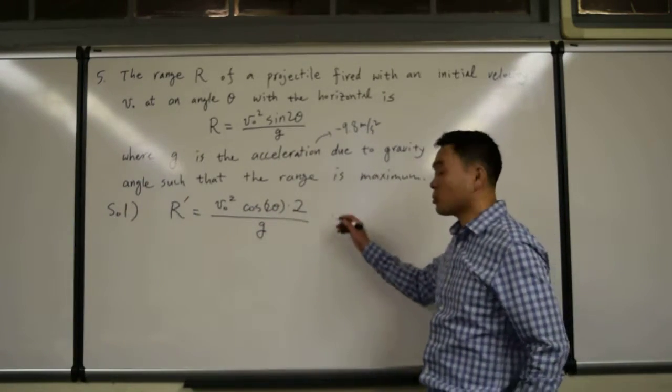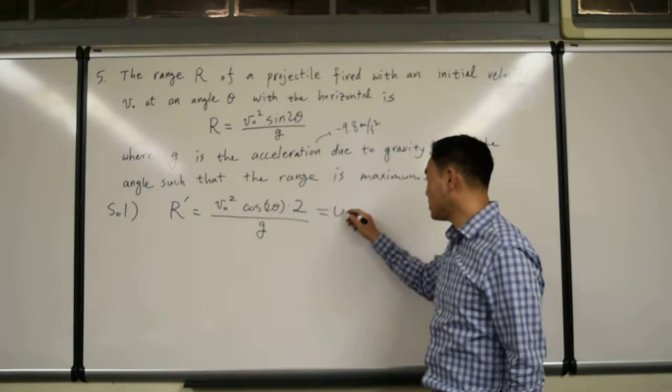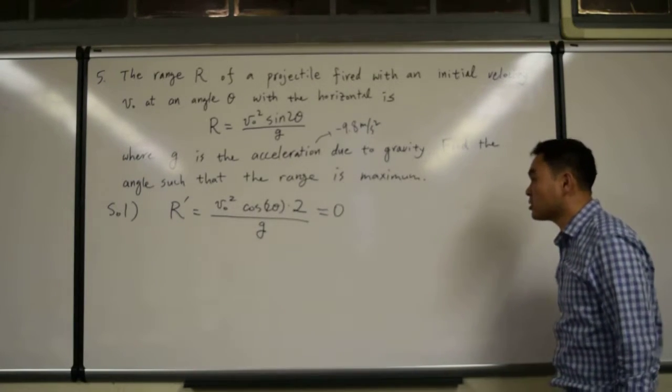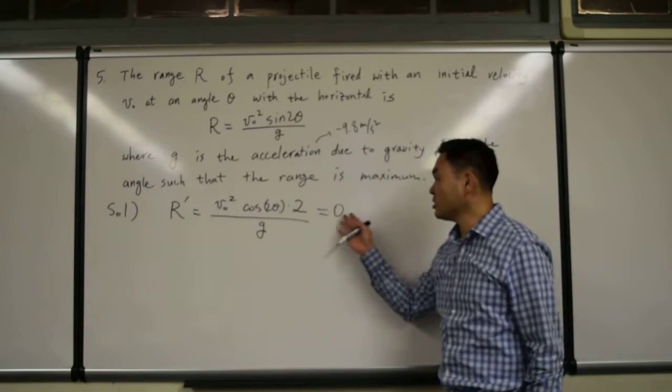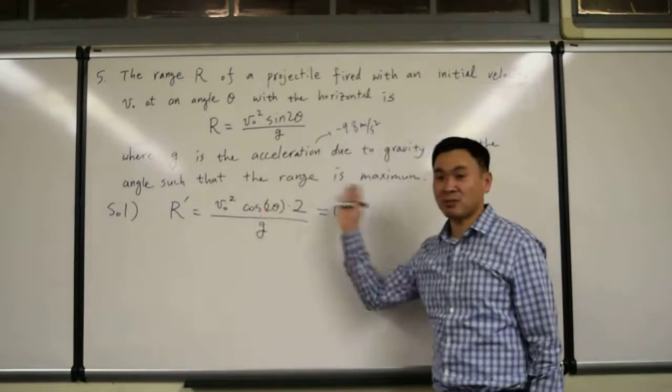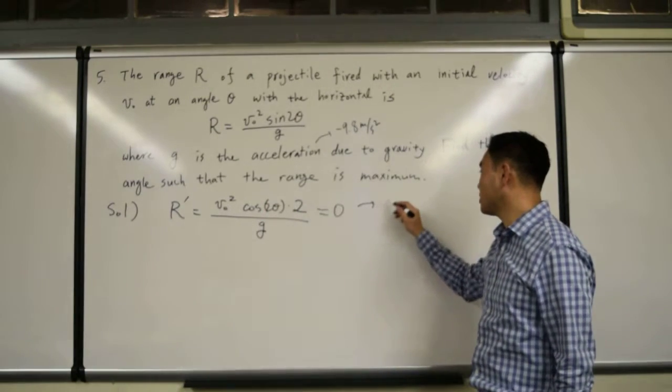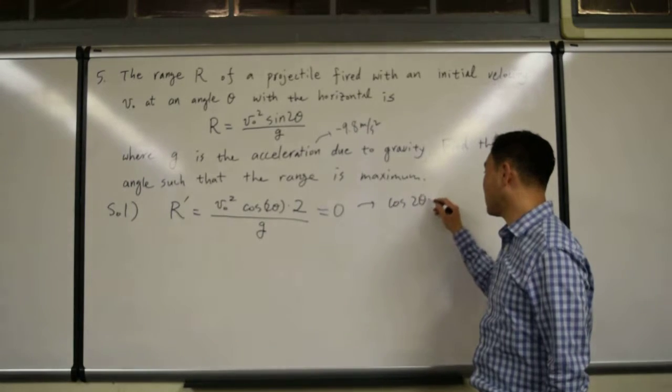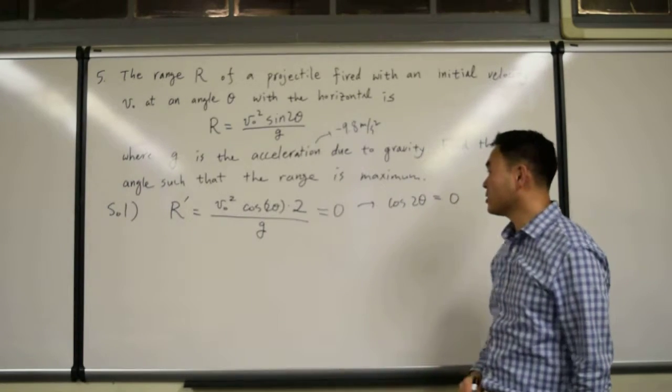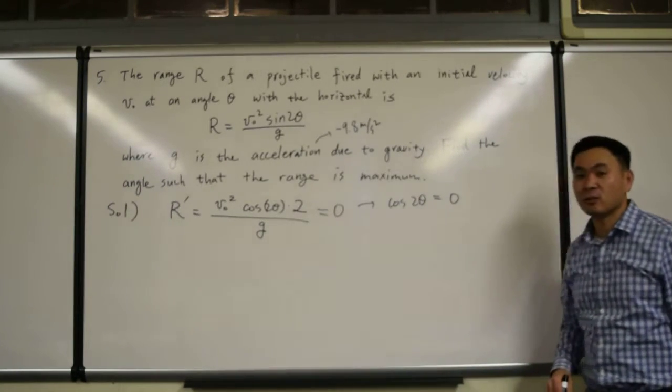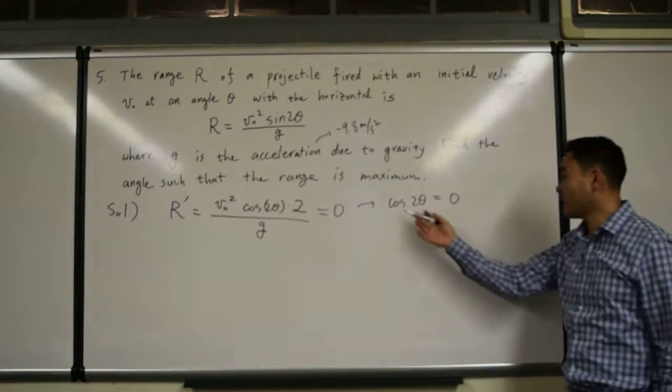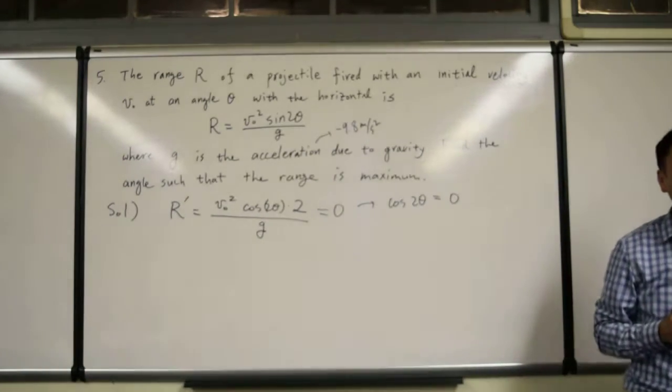Now, first you have to figure out the critical numbers. Set it equal to zero. When does it become zero? Well, multiply by g, divide by 2, and divide by v-naught squared, and you get cosine 2 theta equal to zero. So in order to be a critical number, it has to be this one. Cosine 2 theta has to be equal to zero.